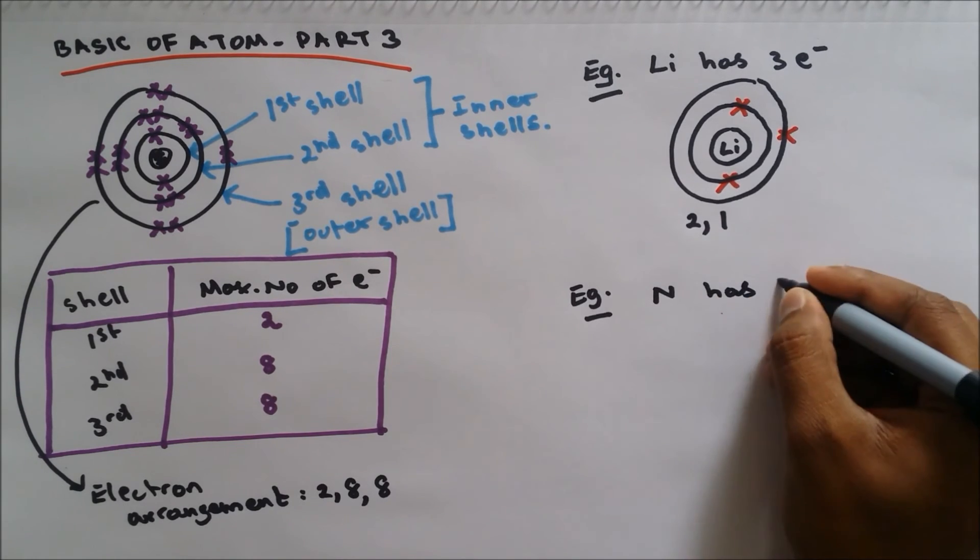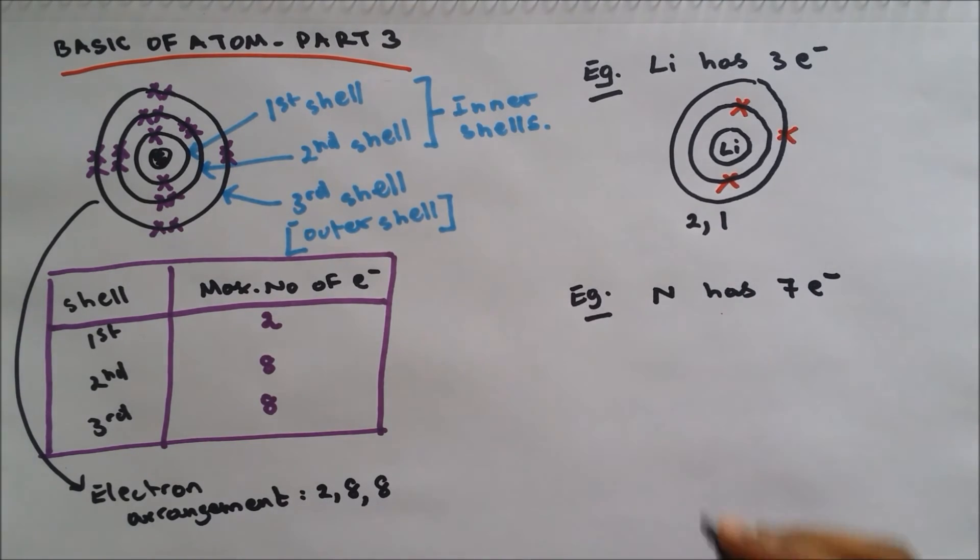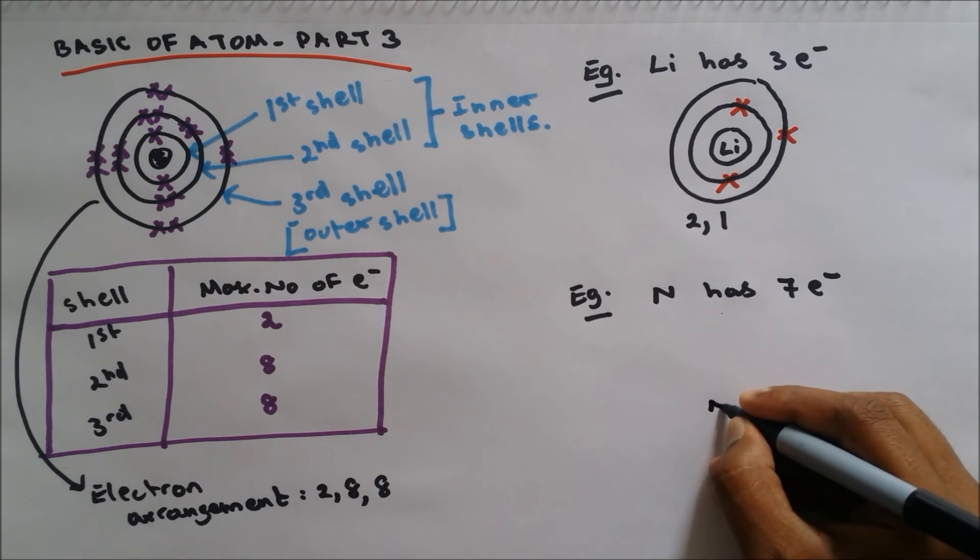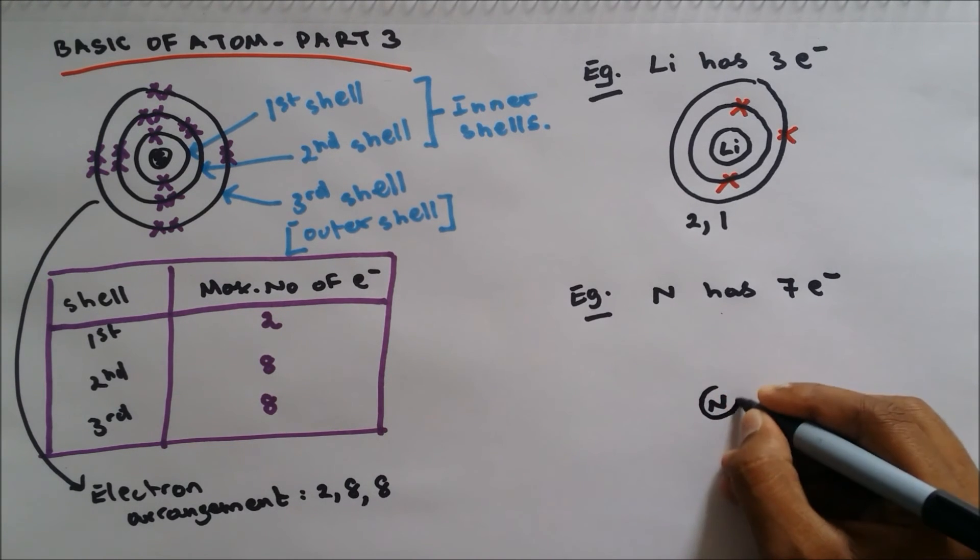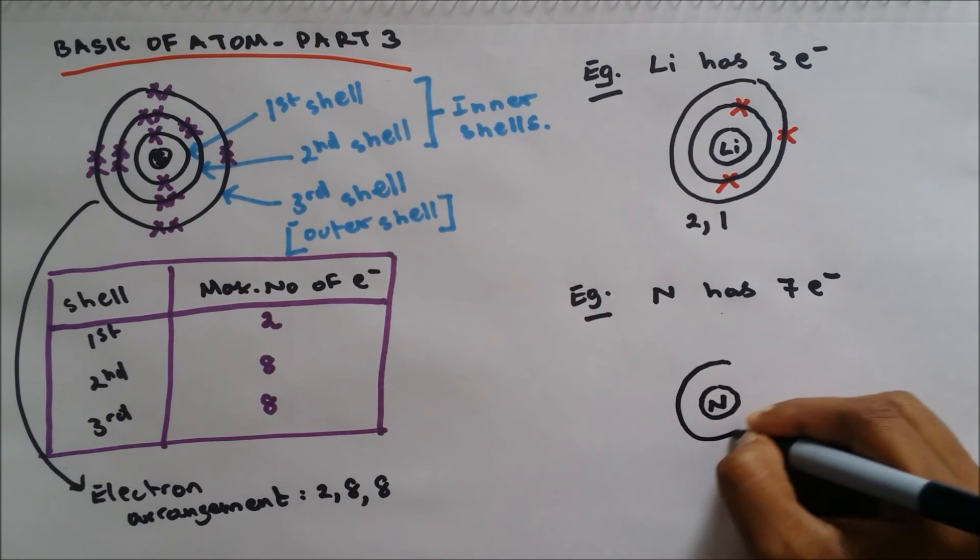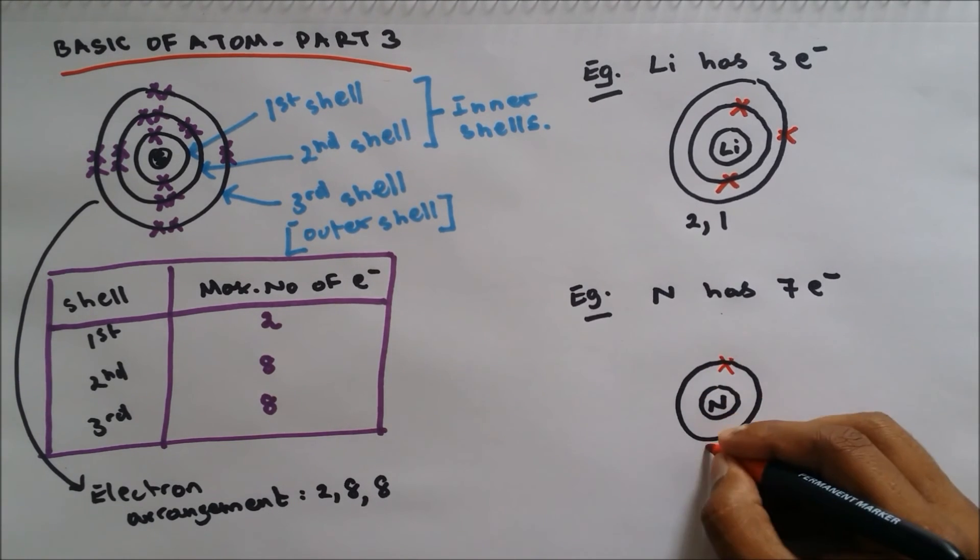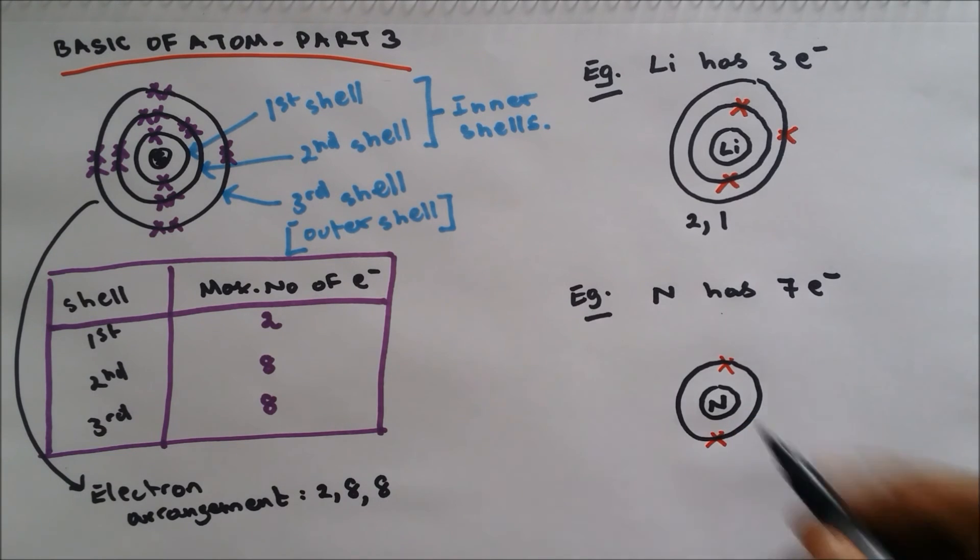Nitrogen. Nitrogen has seven electrons, okay? So you tell me how do I do this? Draw the nucleus, nitrogen. On the first shell I only have two, and it's not finished, so I need to open up my second shell.